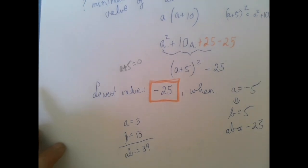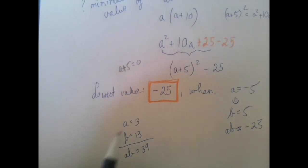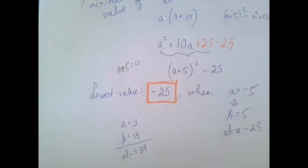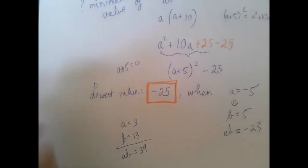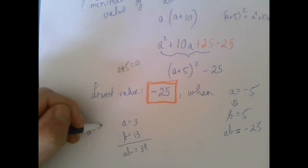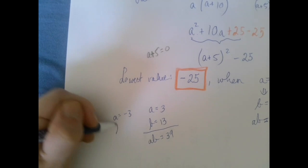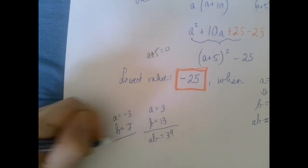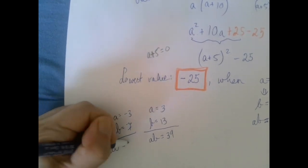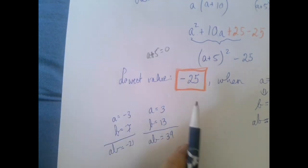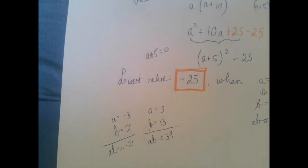We sort of have this feeling that we have a negative value for the product, so the lowest value is going to be negative. So that means one of them should be positive, the other one negative. Well, let's try a equals negative 3. If a is negative 3, then b is plus 7, and then we get ab is negative 21. That is greater, close, but greater than negative 25.